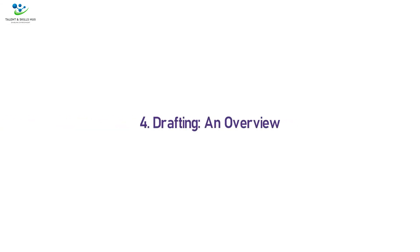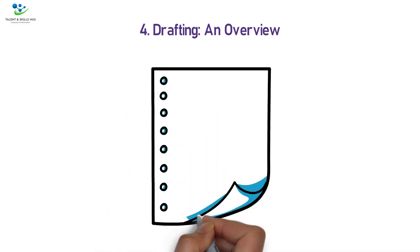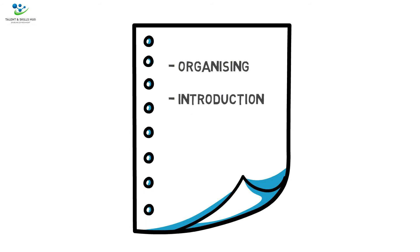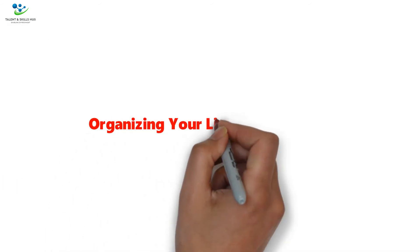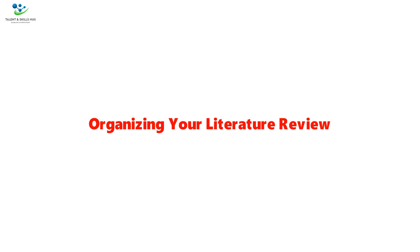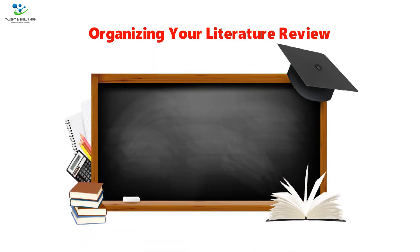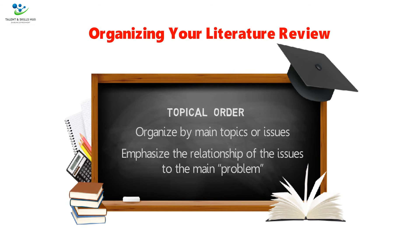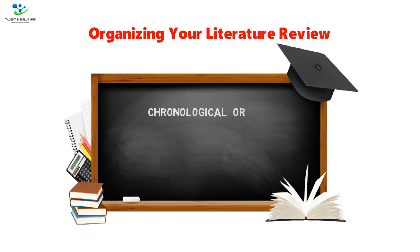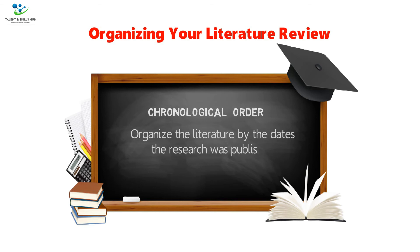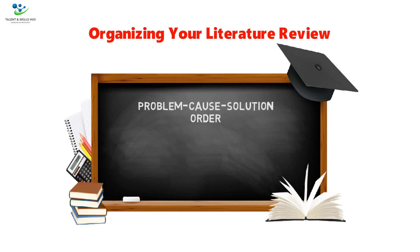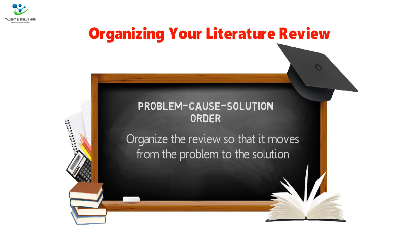Step five: drafting — an overview. To help you approach your draft in a manageable fashion, this section addresses organizing, introduction, and conclusion. You can organize your literature review in any of these formats: topical order (organize by main topics or issues, emphasizing the relationship of the issues to the main problem), chronological order (organize the literature by the dates the research was published), or problem-cause-solution order (organize the review so that it moves from the problem to the solution).